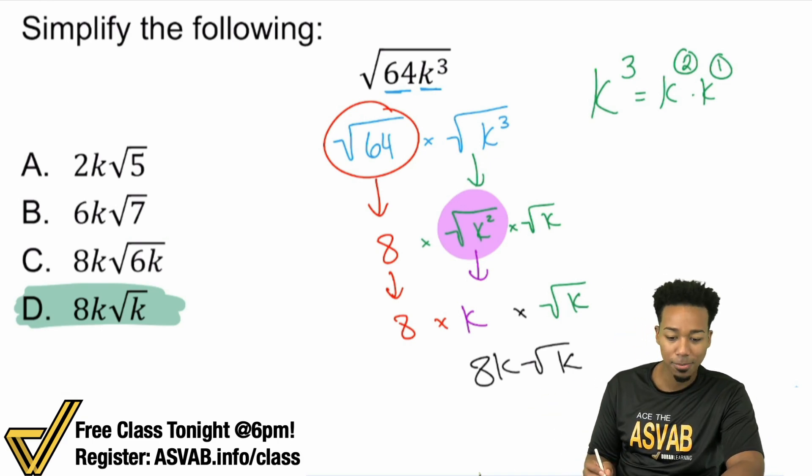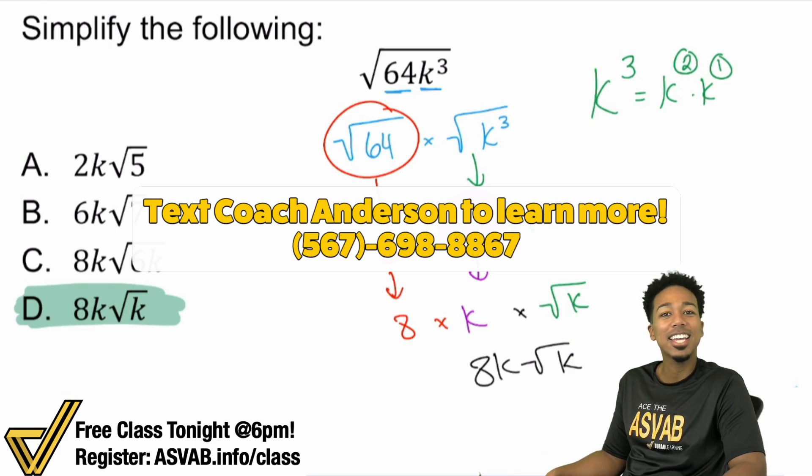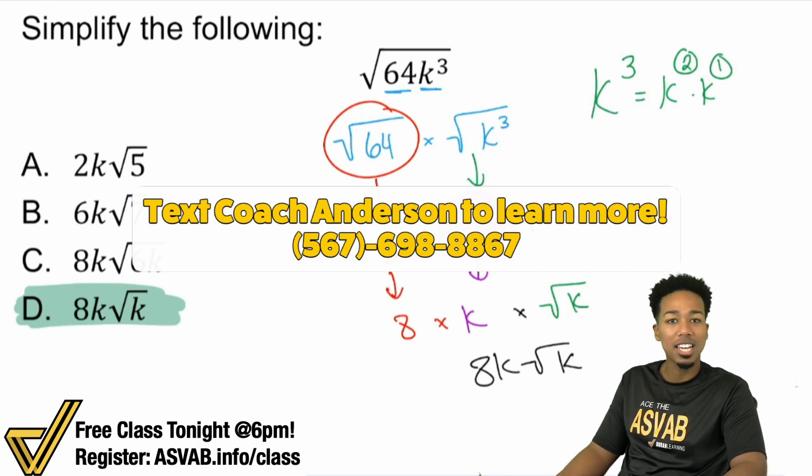Again, my number is 567-698-8867. Let me know how you're doing with the ASVAB so far and let me know that you came from YouTube. That way I understand exactly how to help you and your needs.